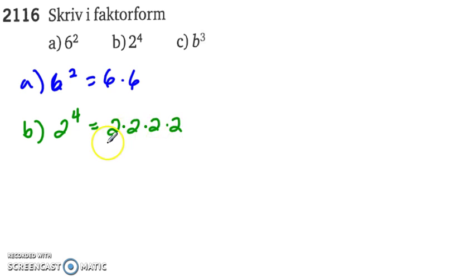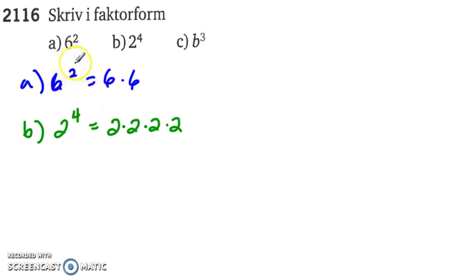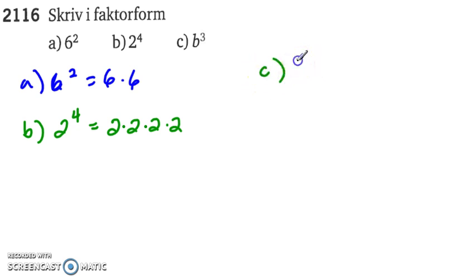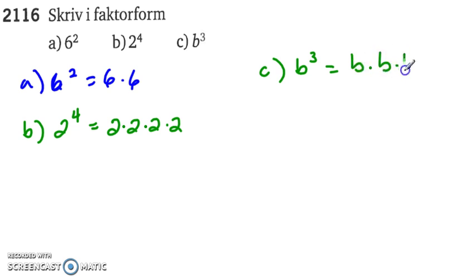And this means that you multiply it by itself as many times as the exponent. So 6 times 6 — two times here. For example C, b to the power of 3 means that you multiply b three times by itself.